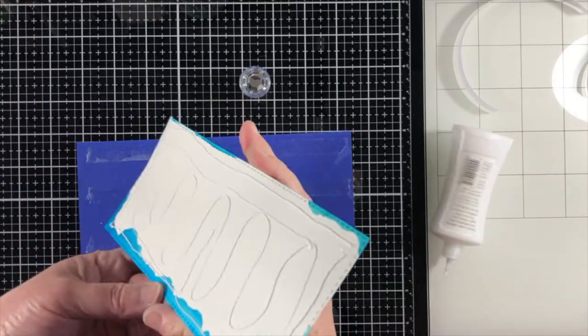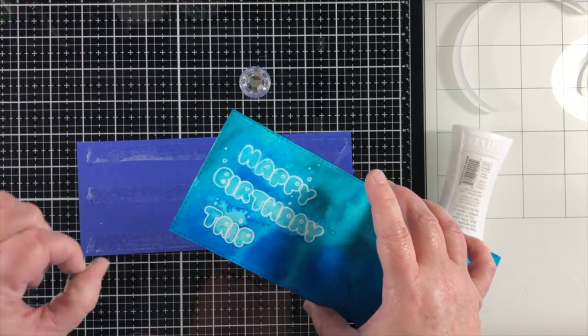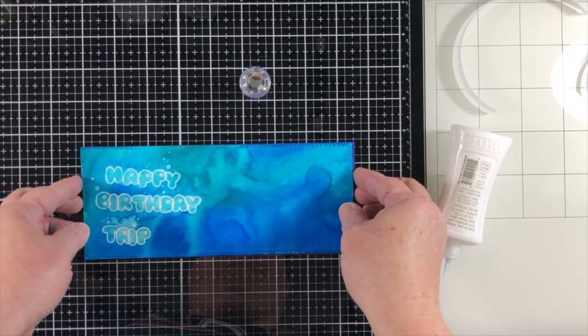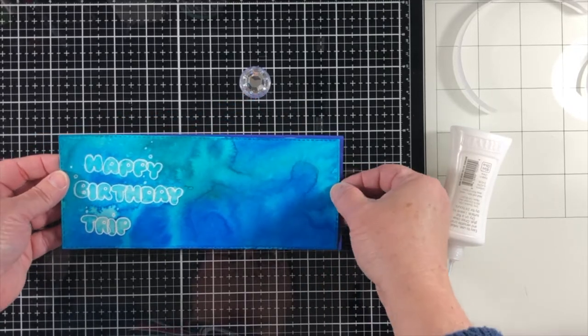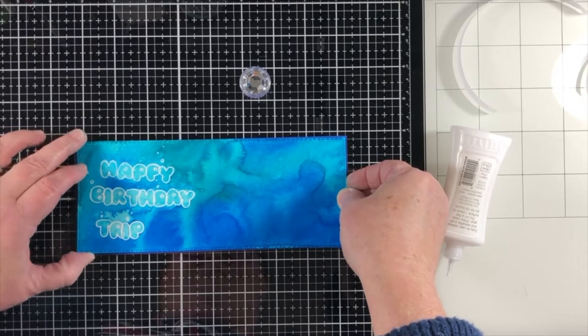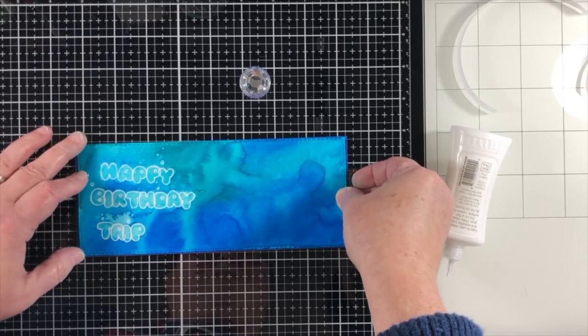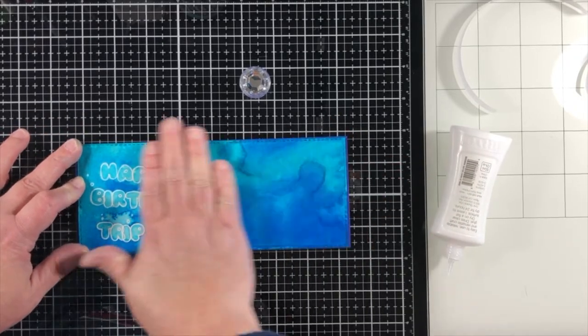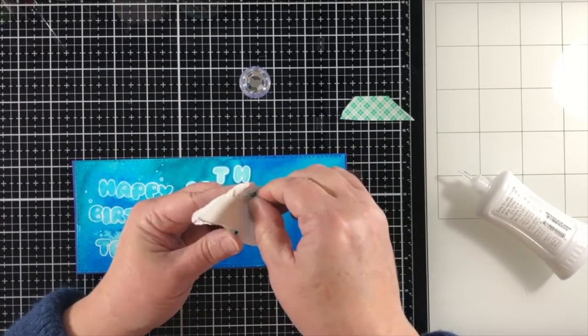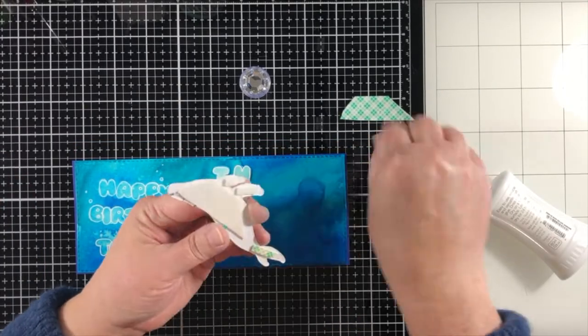And I'm adding some strong adhesive to the card base and then liquid glue to the back of the watercolor paper. And the reason is because the panel cut out just slightly smaller than my card base. And I wanted there to be that liquid glue ability to just wiggle it a little bit and get it into just the right spot. And that worked out perfectly.